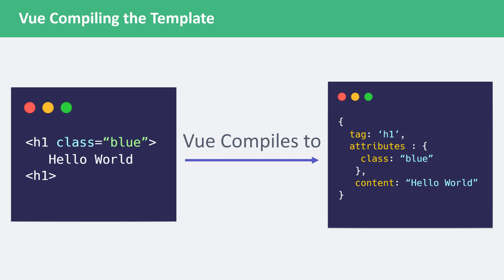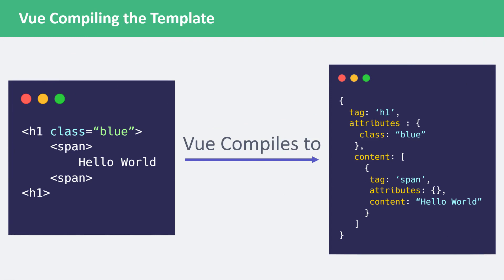Here is a basic example. On the left, we have an H1 tag with some content inside of it. On the right is what it gets compiled to — an object. The object will contain the tag name, attributes, and content inside the element. A step up from this would be nested elements. In this example, the template has an additional span tag surrounding the text. Everything is the same on the right except for the content property. Instead of a string, Vue will store the content as an array of objects, where each object represents a child element in the parent element.